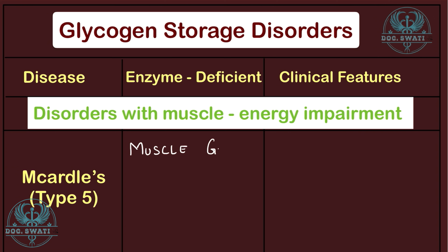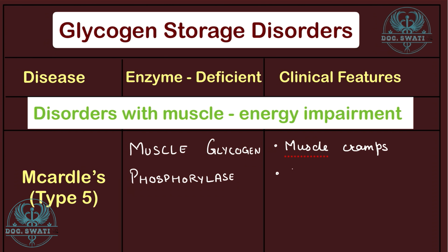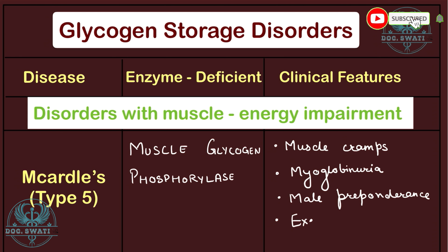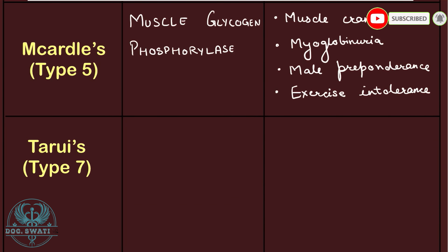The first muscle energy impairment disorder is McArdle's disease, which is Type 5 glycogen storage disease. It is caused due to the deficiency of muscle glycogen phosphorylase. Clinical features include muscle cramps, myoglobinuria, male preponderance, and exercise intolerance.